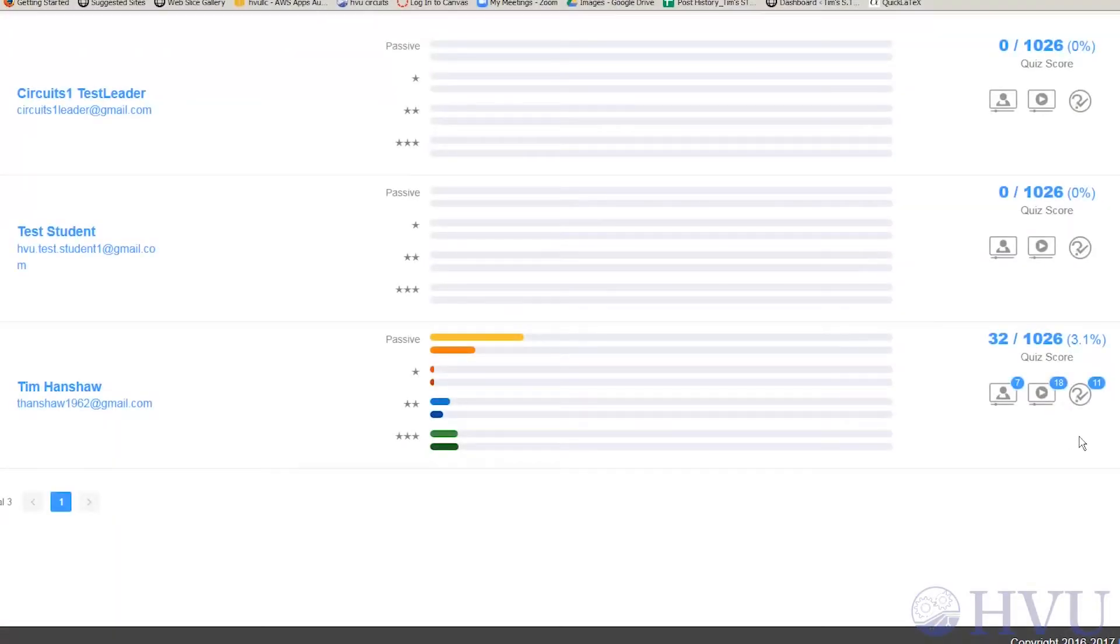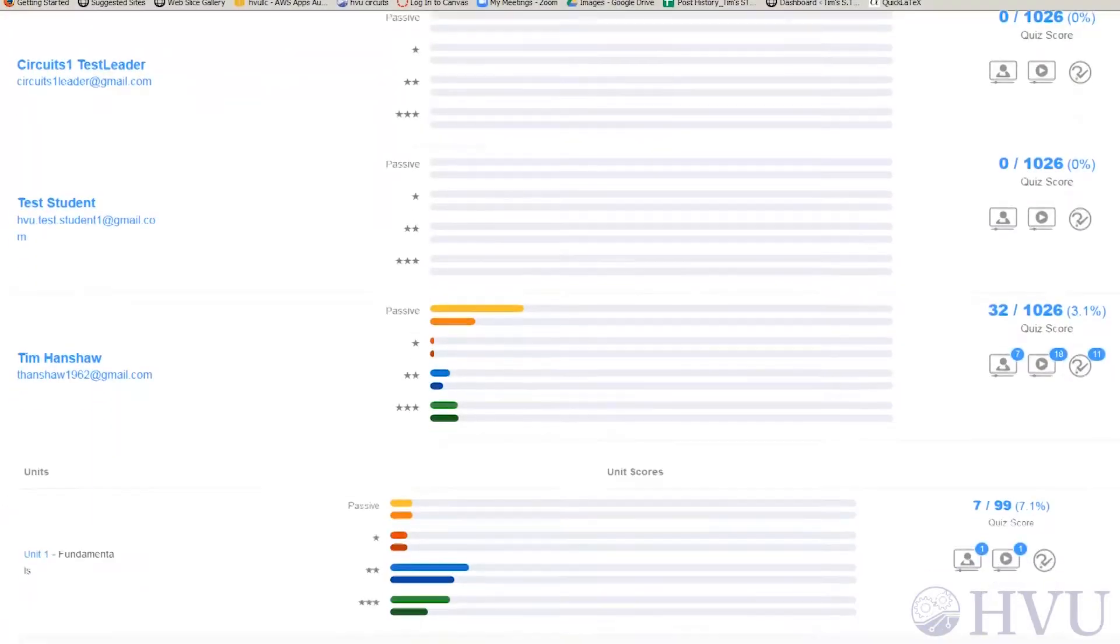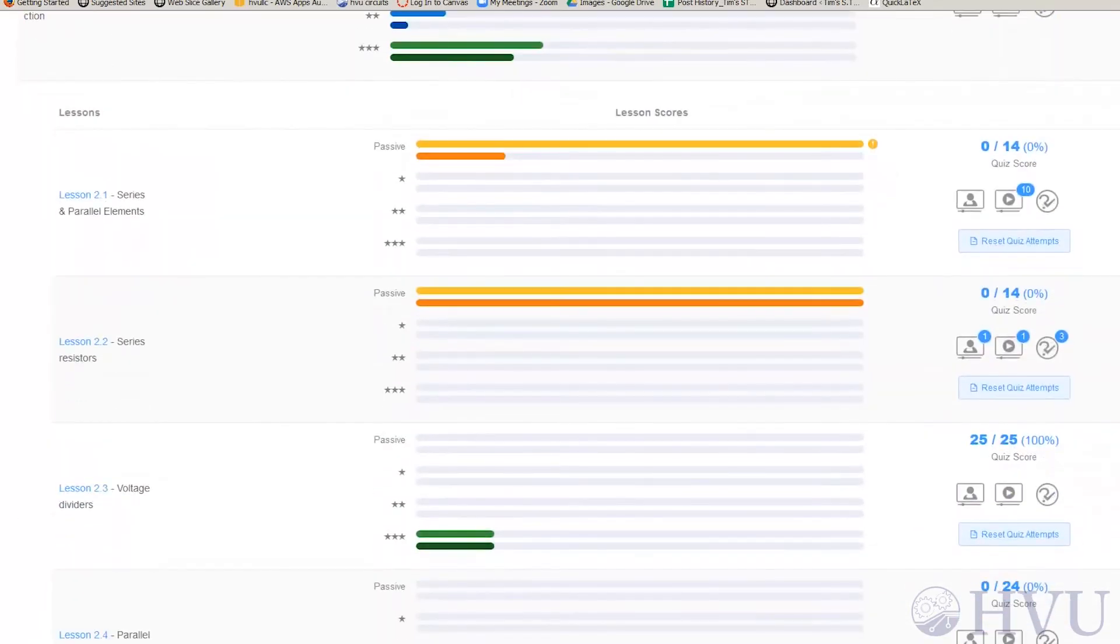Let's use this student as an example of how we might interpret these metrics. I'll take a look inside Unit 2 and look at the first few lessons there. In Lesson 2.1, the student is only performing passive activities. He simply re-watched the lecture video 10 times. You can see the raw data associated with the progress bars by hovering the mouse over the appropriate bar.